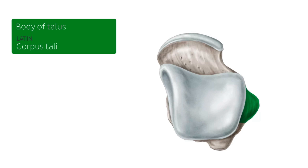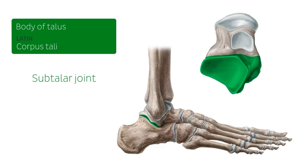Though there are no muscle attachments, several ligaments are attached to the body of the talus, including the posterior, lateral, and medial talocalcaneal ligaments, which contribute to the formation of the subtalar joint — also known as the talocalcaneal joint — connecting the talus and calcaneus. Additionally, attachments are found for the deltoid and posterior talofibular ligaments, which contribute to the formation of the ankle joint, also known as the talocrural joint.